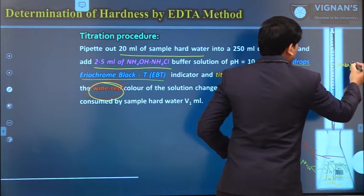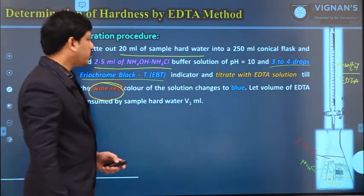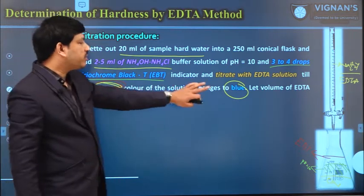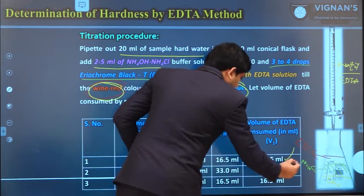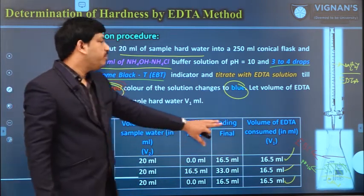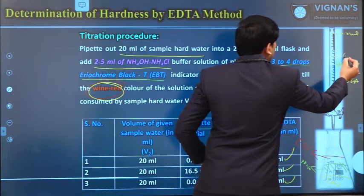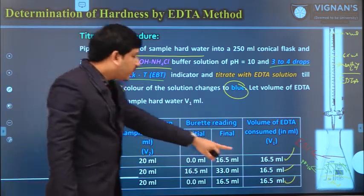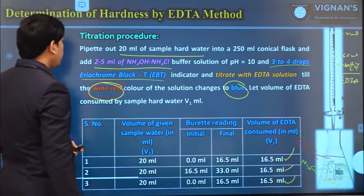Then titrate the entire solution by using standard disodium salt of EDTA (Na₂H₂Y) from the burette. The wine red color turns to blue color at the end of the reaction — this color change is the indication for completion of the reaction. We have to repeat the titration until we get concordant readings. All values are tabulated: volume of water sample taken is 20 ml, burette initial reading is 0.0 ml, and for the first titration approximately 16.5 ml of EDTA is required.